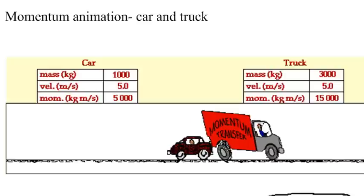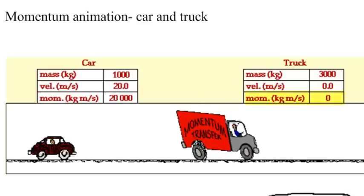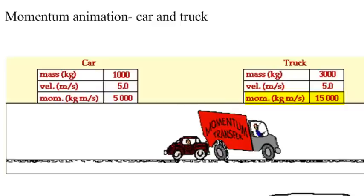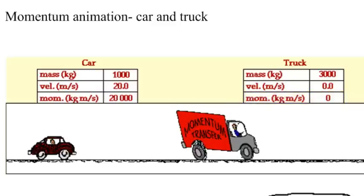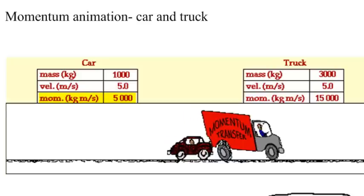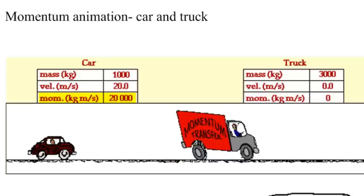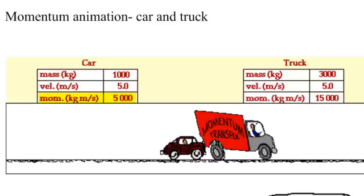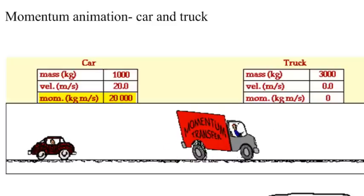The momentum you see at the beginning, if you look at the truck side, the momentum's 0 for the truck. And then it changes to 15,000. So it's 0 at the beginning. The car is 20,000 kilograms times meters per second, which is mass times velocity for momentum. The car had 20,000 to begin with, and now it dropped down to 5,000.